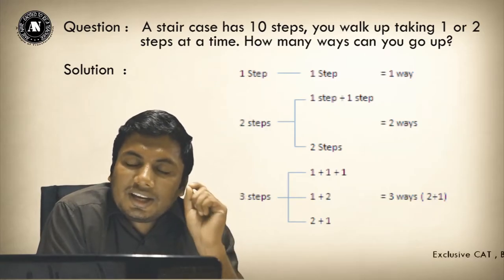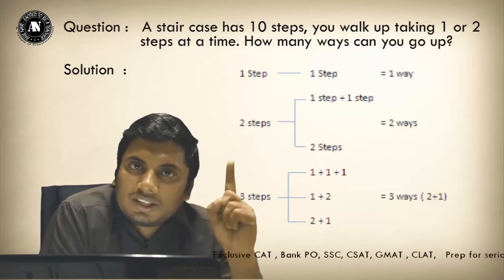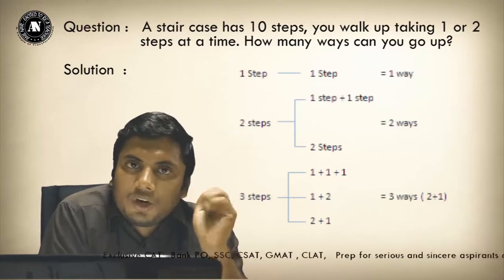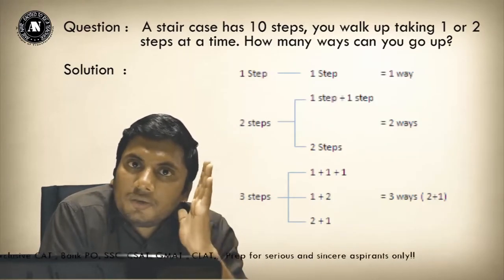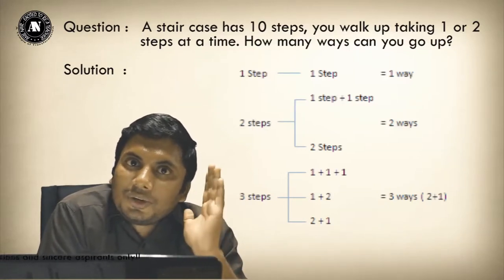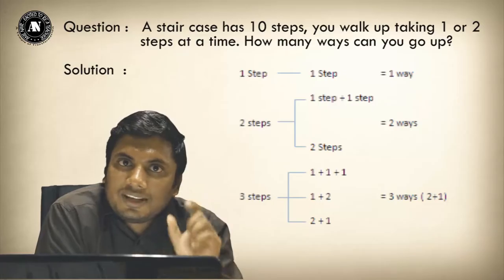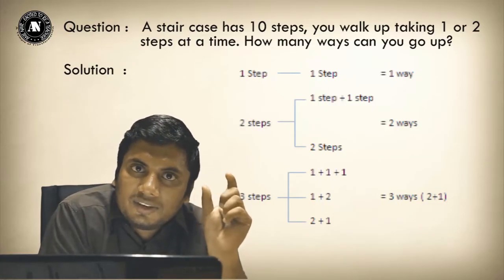Now let us analyze the pattern. To take one step we require only one way. To take two steps we require 1+1 or 2. To take three steps we require 1+2, 2+1, 1+1+1. Please observe the number of ways: first way is one, second way is two, third way is three.